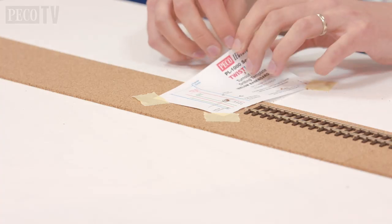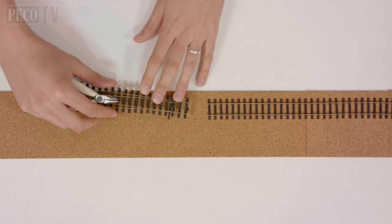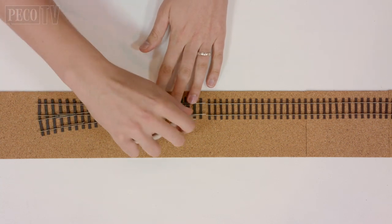Now remove the template and fix your turnout in place. We are using Pico track pins in this instance.